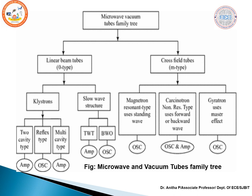To overcome these limitations, oscillators and amplifiers for the microwave region were designed using different technology. The microwave tube family is classified into two types based on the relationship between the magnetic and electric fields: linear beam tubes (also called O-type), where the DC magnetic field is parallel to the DC electric field, and cross-field tubes, where the two fields are perpendicular to each other.